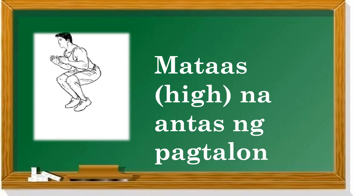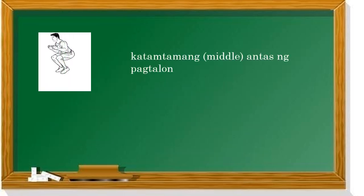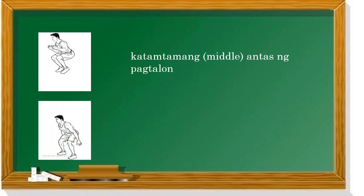Tingnan natin ang larawan. Ito ay mataas o high na antas ng pagtalon — siya ay tumatalon. Pangalawa, katamtaman o middle na antas ng pagtalon — hindi ganong mataas. Ito naman, mababa ang antas ng pagtalon, o low.